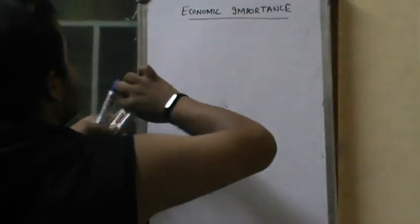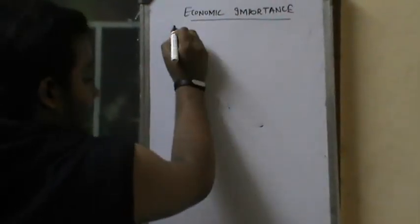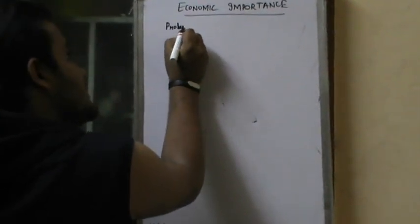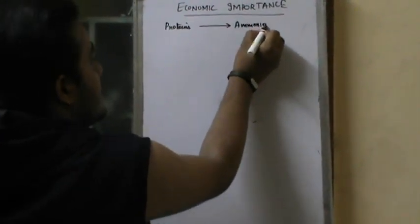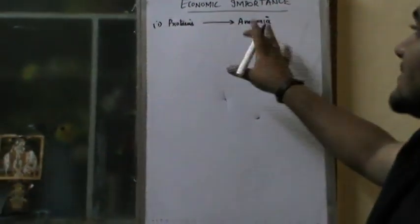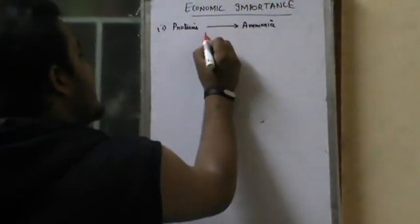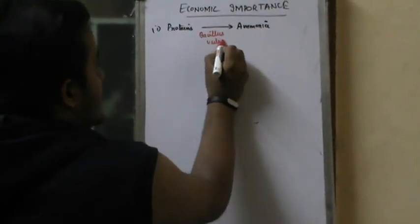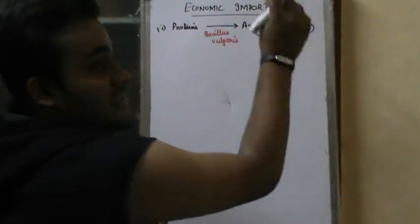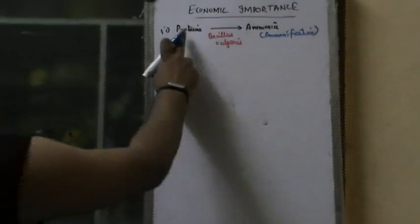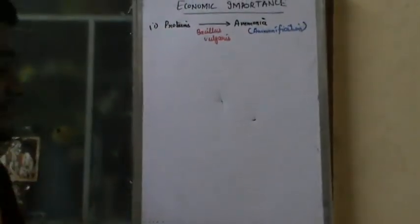There are some bacteria that convert proteins into ammonia — this is a very nice NCERT liner. Proteins are converted into ammonia by the famous bacteria Bacillus vulgaris. This process is called ammonification — again an NCERT liner from Mineral Nutrition chapter, Class 11 Plant Physiology.